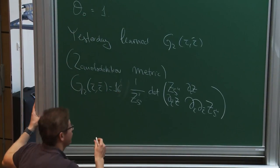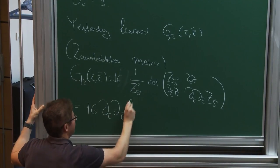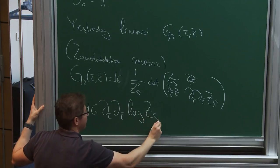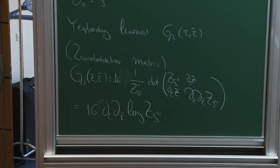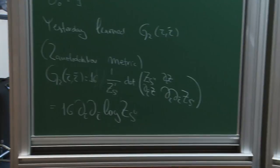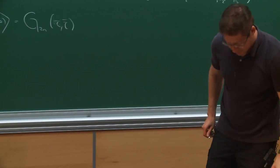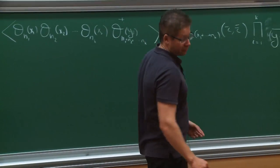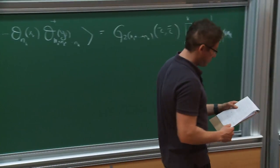Another equivalent formula, which was a homework exercise, is to express this as a derivative of the logarithm of Z. So now we can proceed. We can at least start from G₂, see what its properties are, and then generalize to all the other extremal correlators.